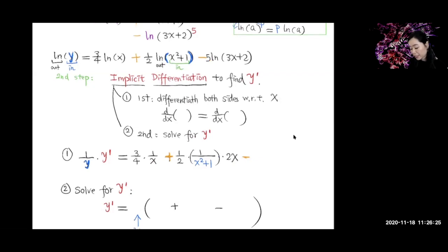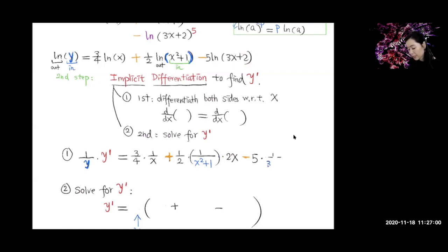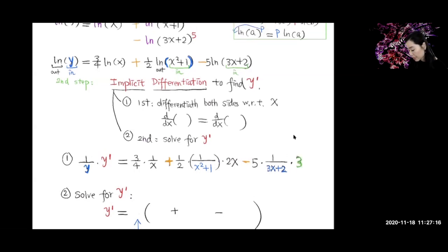Minus the last term: the coefficient 5 is a constant multiple, so put the 5 in front. Then the derivative of ln(3x+2) using the chain rule: differentiate the outer ln to get 1 over (3x+2), then multiply by the derivative of the inner function (3x+2), which is 3. So we get 5 times 1/(3x+2) times 3, giving 15/(3x+2). Once you break it down step by step, it's not that scary.